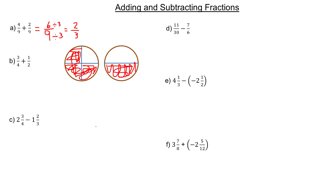What we have to do in the second one is, if I draw a line here like this, then now it has the same size pieces as this one — they're all quarters. Now I can say I have one, two, three, four, five-quarters.